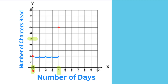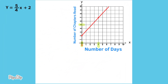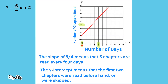Starting at the y-intercept of 2, after the fourth day five more chapters are completed for a total of seven. The slope of 5/4 means that five chapters are read every four days. The y-intercept means that the first two chapters were read beforehand or were skipped.